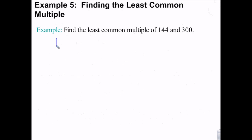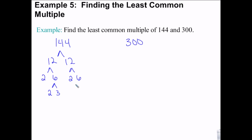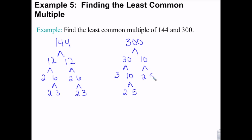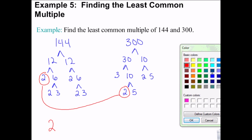We're going to factor 144 and 300. So 144 is 12 times 12, which is 2 times 6, and 6 is 2 times 3.